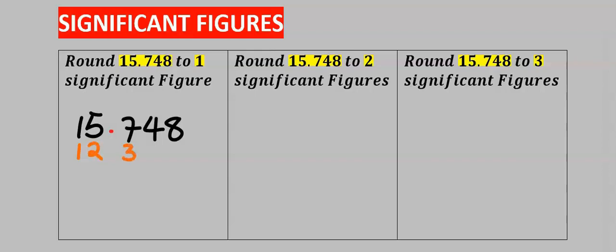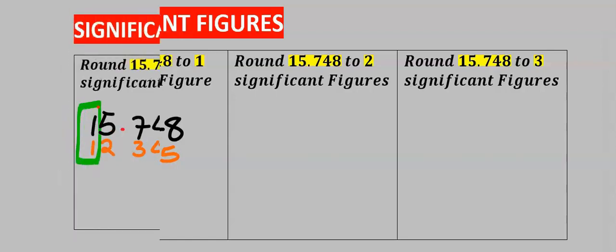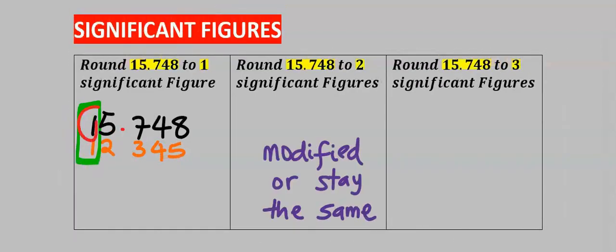7 is the third significant figure, 4 is the fourth significant figure, and 8 is the fifth significant figure. Hence, the first significant figure is 1. This 1 will either be modified or it will stay the same.